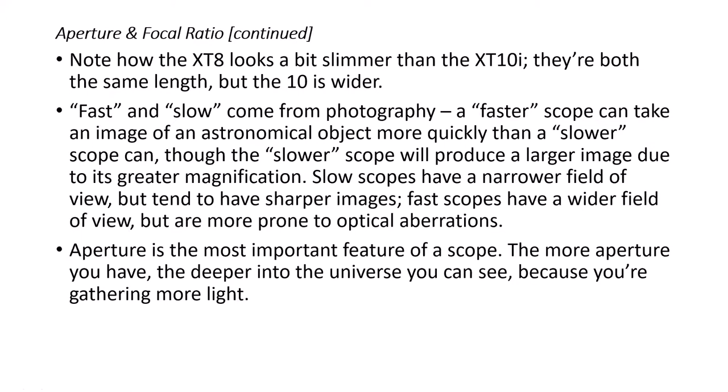Fast and slow came from the old days of photography. A faster scope takes an image more quickly; a slower scope makes a larger image with greater magnification and a narrower field of view, but tends to be a little sharper. Faster scopes can have a wider field of view but are more prone to optical aberrations. Aperture is the most important feature — the more aperture you have, the deeper into the universe you can see.